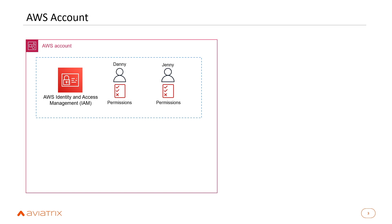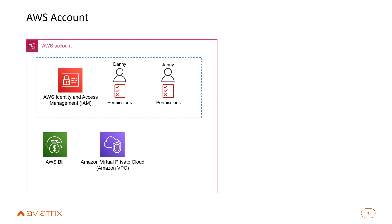For example, Danny might be part of the DevOps team, so we'll give him permissions to launch EC2 instances and use related AWS services. Jenny is part of the network team, so we'll give her permissions to create VPCs, route tables, security groups, and subnets. Every AWS account has its own bill, and all VPCs Jenny creates live only in this account unless she enables VPC subnet sharing via Resource Access Manager to share subnets to another account.